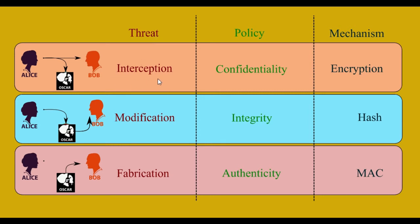The policy against interception is confidentiality — your communication should be confidential, and no one else should be able to intercept, copy, capture, or reveal what you are communicating. The next thing is integrity, which gives you the assurance that what you send, the receiver will receive the same thing, and nobody in between will change or modify your message.